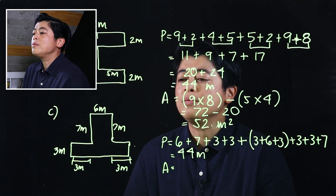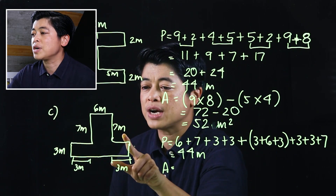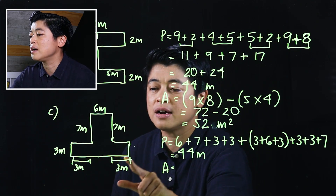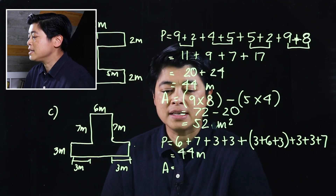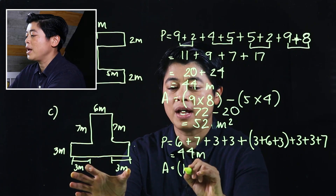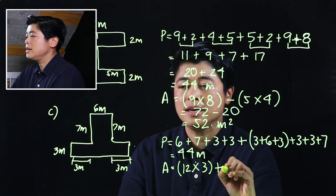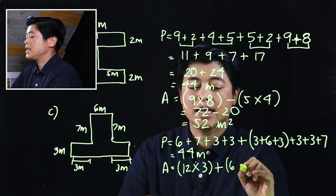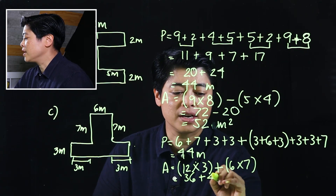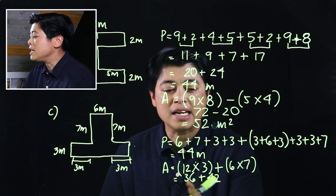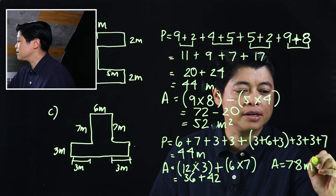For the area, rather than taking the whole thing and subtracting, it's easier to take the area of the bottom rectangle plus the area of the top rectangle. The bottom rectangle is 12 times 3, and we add 6 times 7. That gives 36 plus 42, which equals 78 meters squared.